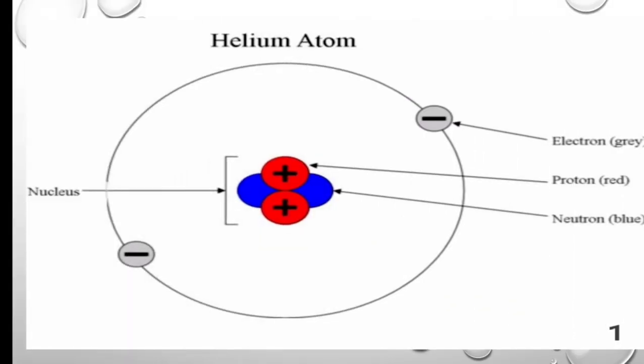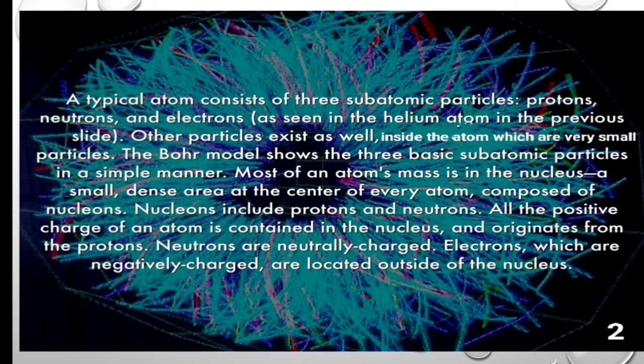Here is the structure of helium atom. In the middle you can see the red protons, blue neutrons. These are present inside the nucleus and electrons are present in the shells outside the nucleus. A particle atom consists of three subatomic particles, protons, neutrons and electrons.